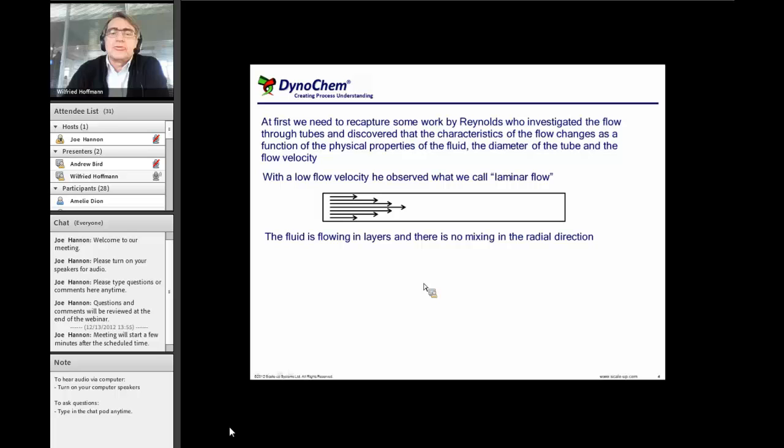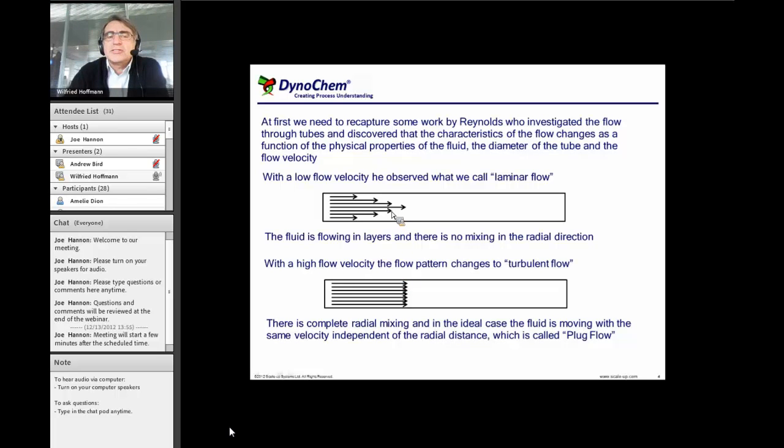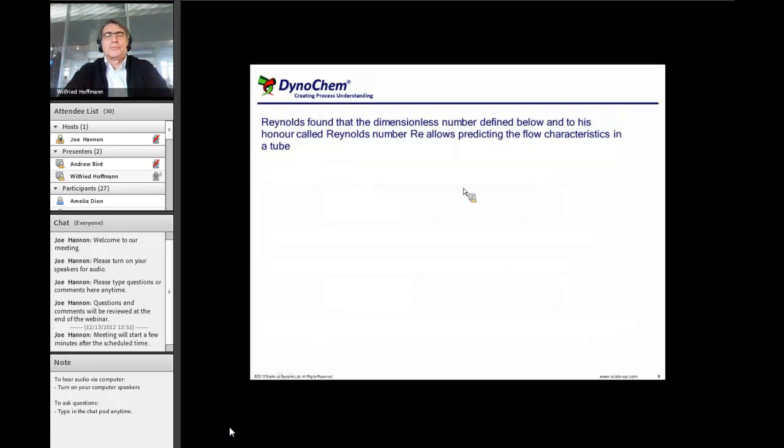However, when we increase the flow rate, then we observe that there is an increasingly radial mixing. And in the ideal case, what we call the turbulent flow, we have a complete radial mixing and all the velocity vectors propagate with a constant speed. So we get something what we now call a plug flow. So we start here and it is like a plug moving from the start till to the end of the reactor. So that is what we would like to model.